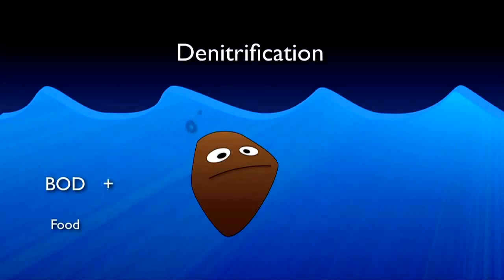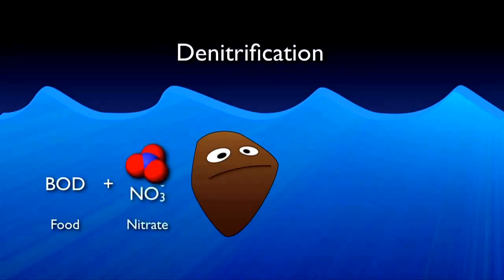If there is no dissolved oxygen present, however, the denitrifying bacteria look to alternative sources such as nitrate. These specialists have the ability to strip the oxygen from nitrate molecules to satisfy their needs. This critical environment — where no DO is present yet nitrates are — is referred to as anoxic, and is absolutely required for denitrification.